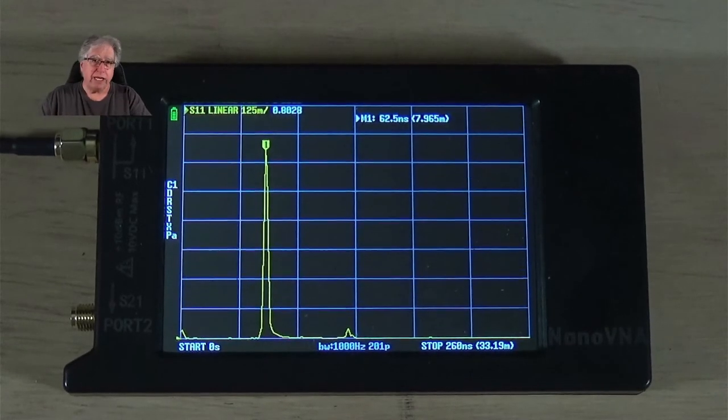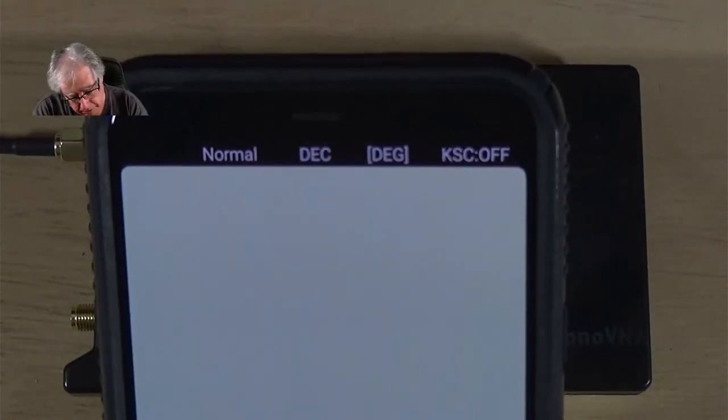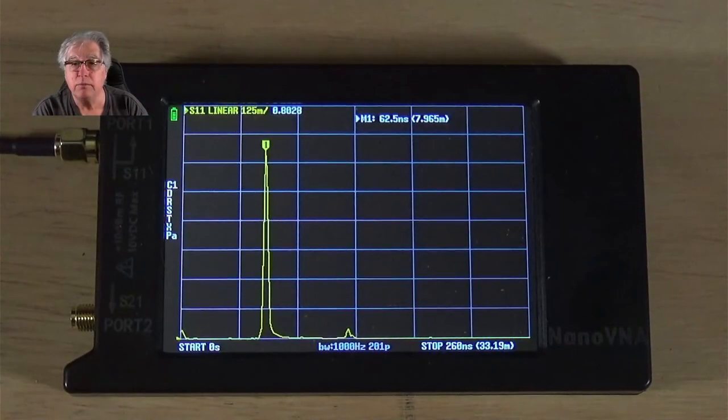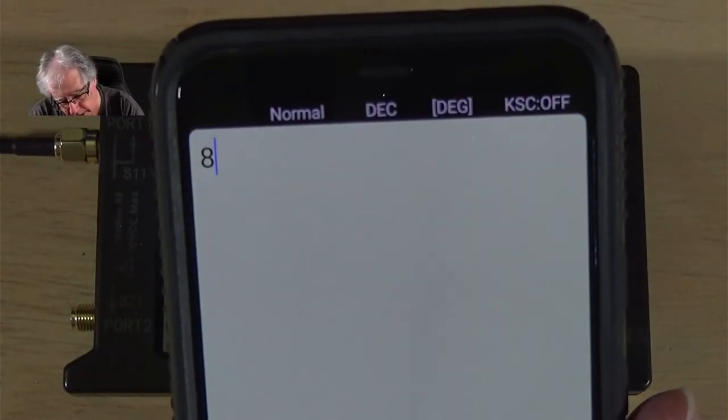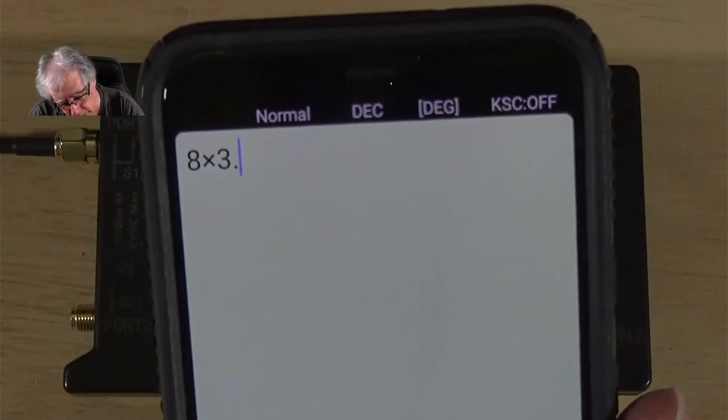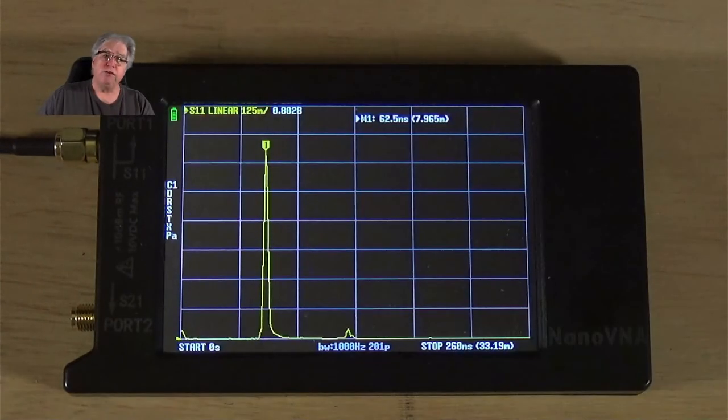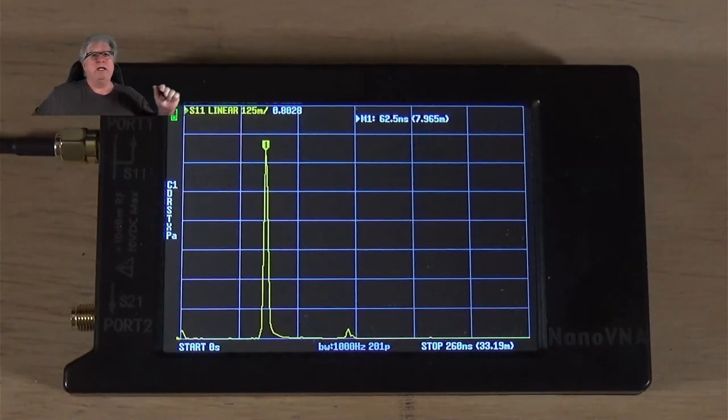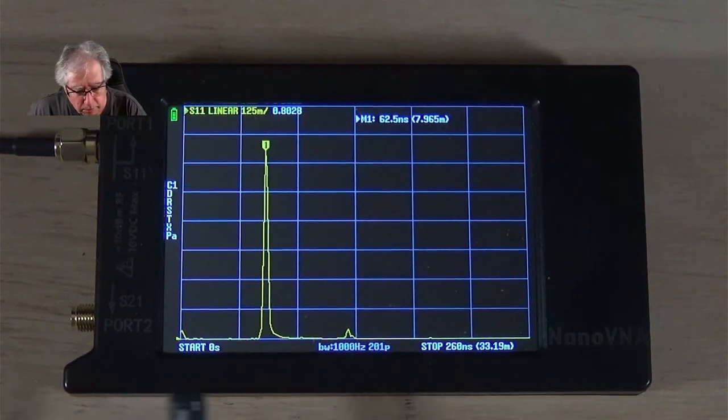What does that work out to in feet? Well, we'll get out our handy calculator, and that's going to be, let's see, what was the number? We'll call it 8 meters, and we'll multiply it by 3.28. It's about 26 feet. That's exactly what the length of this coax, and you know what? This coax apparently doesn't have any opens, but, you know, what are these little bumps here?